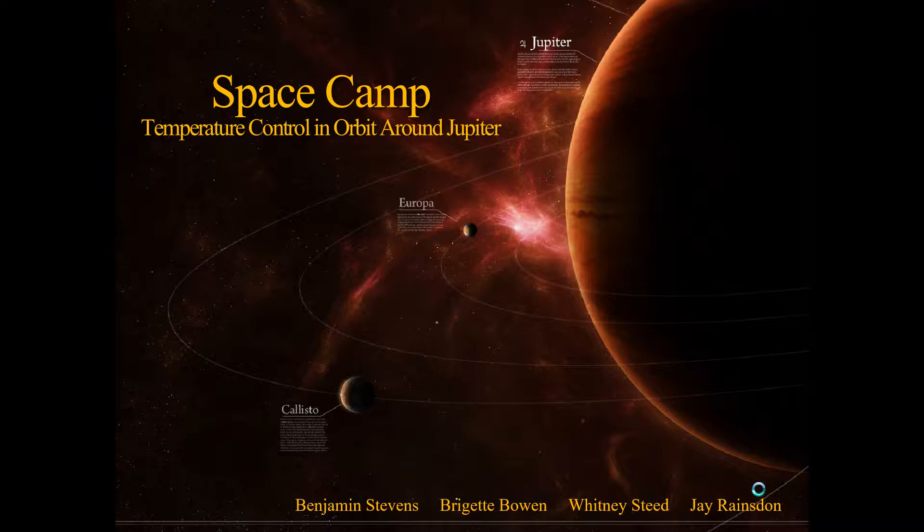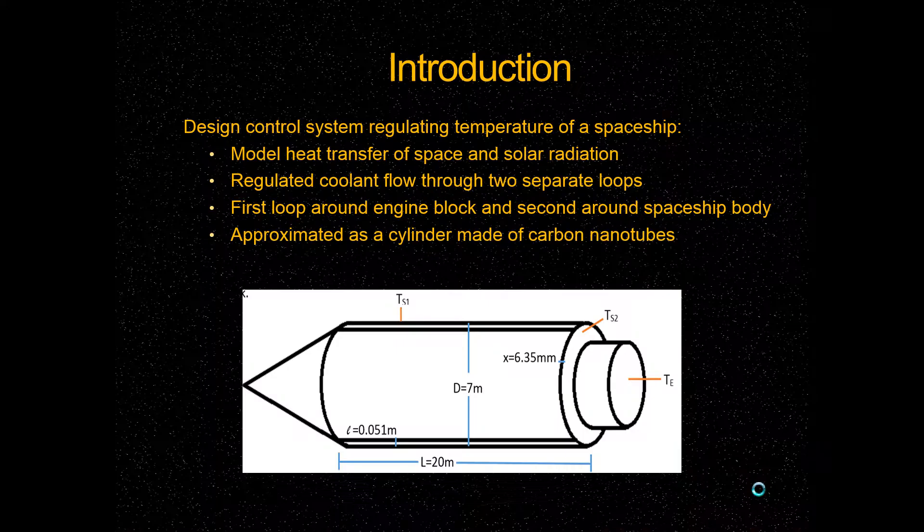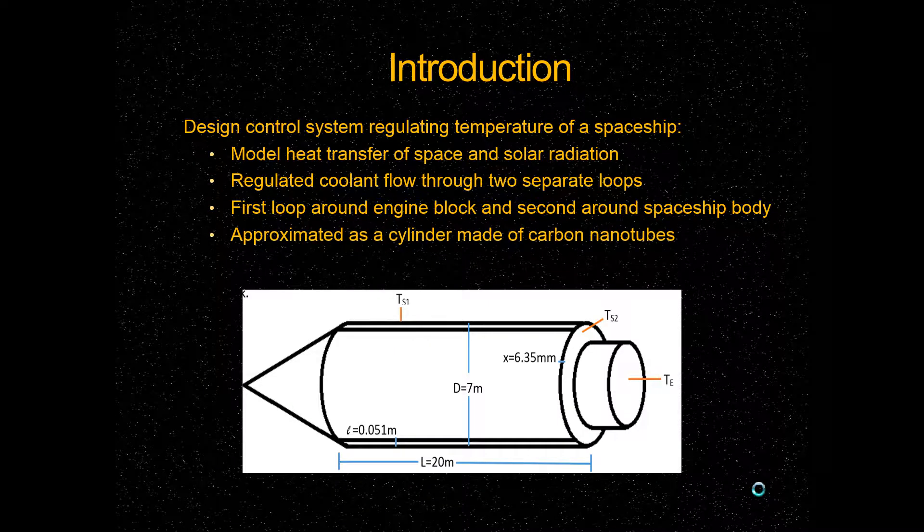Today we're presenting on our project called Space Camp, which is temperature control in orbit around Jupiter. Our objective in this project was to design a control system that would regulate the temperature of a spaceship. The way that we did this was to model heat transfer of space and solar radiation to the exterior of the spaceship, and we regulated the temperature through coolant flow through two different loops.